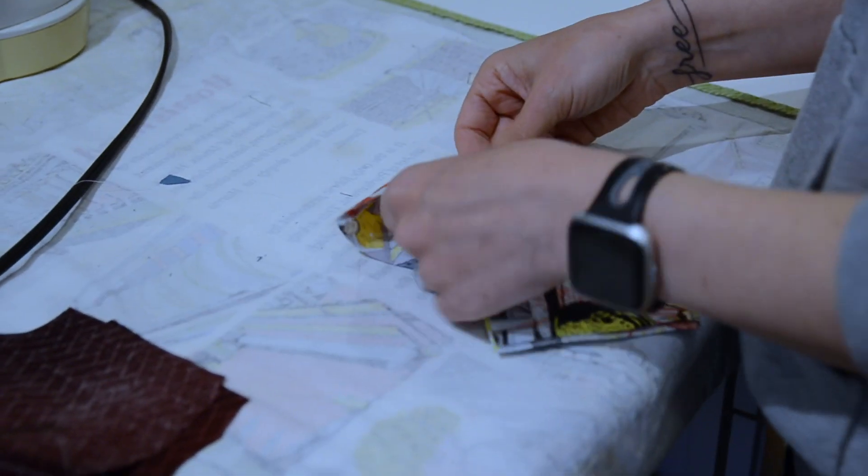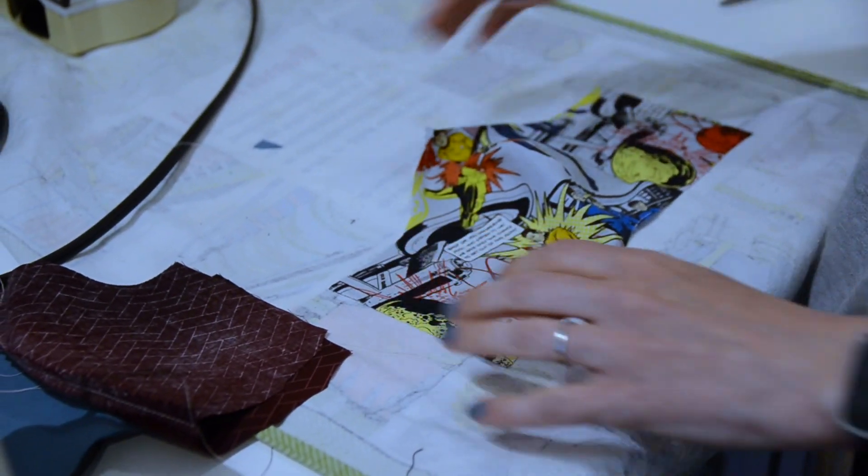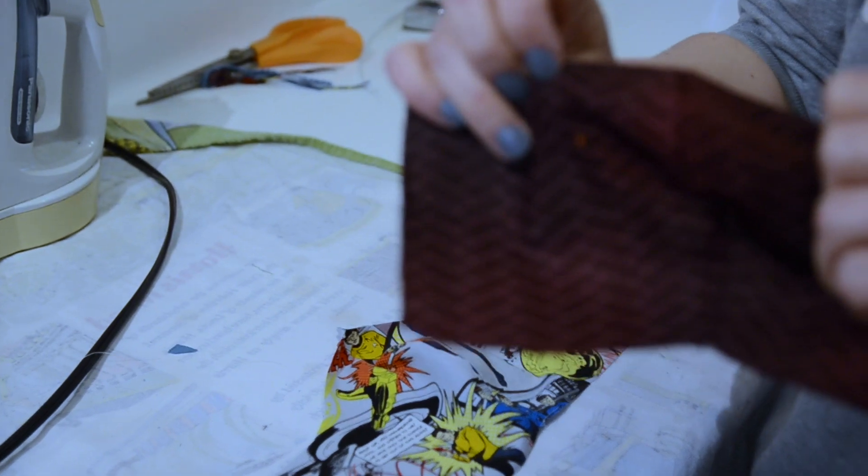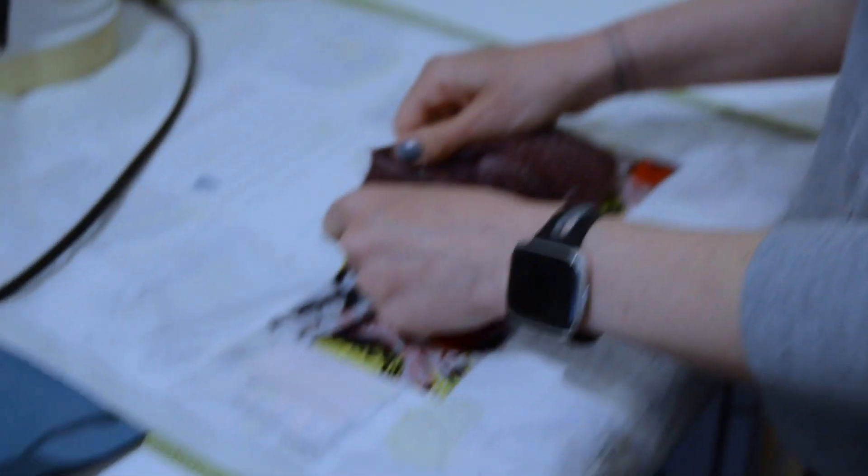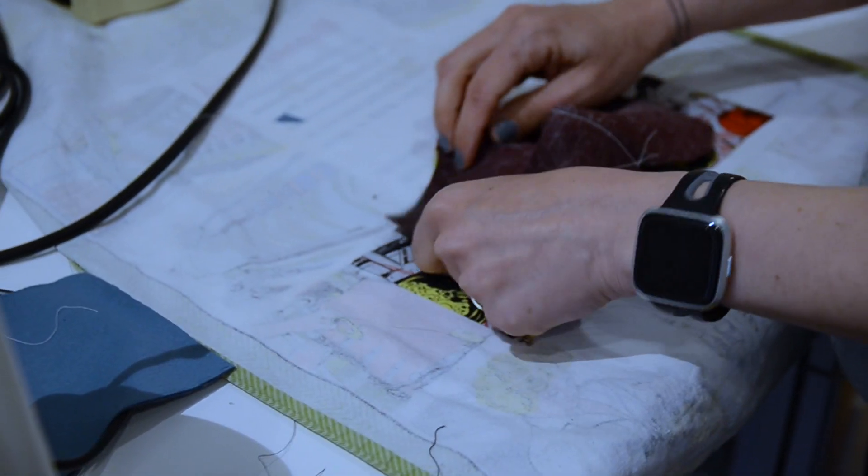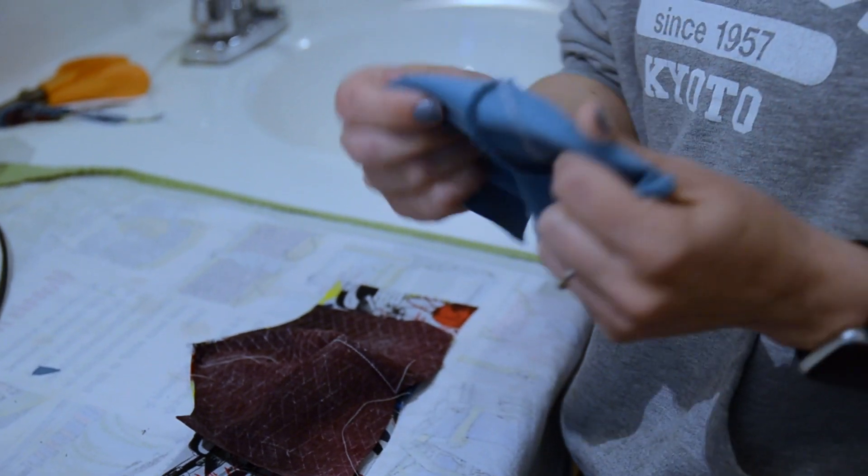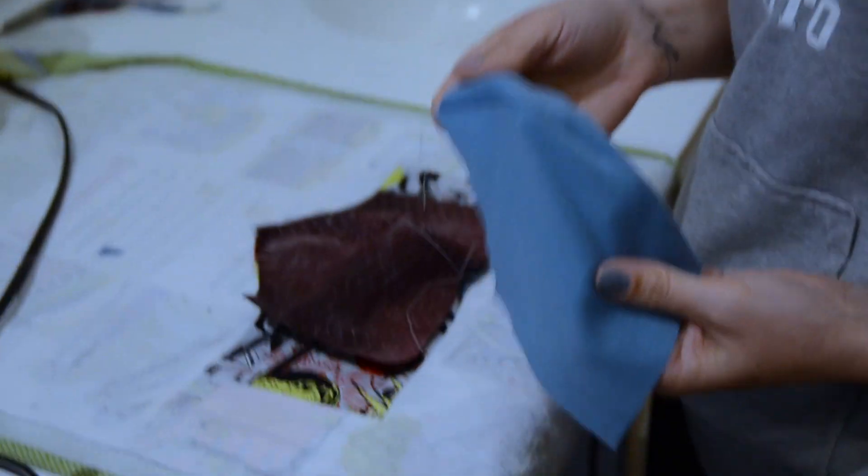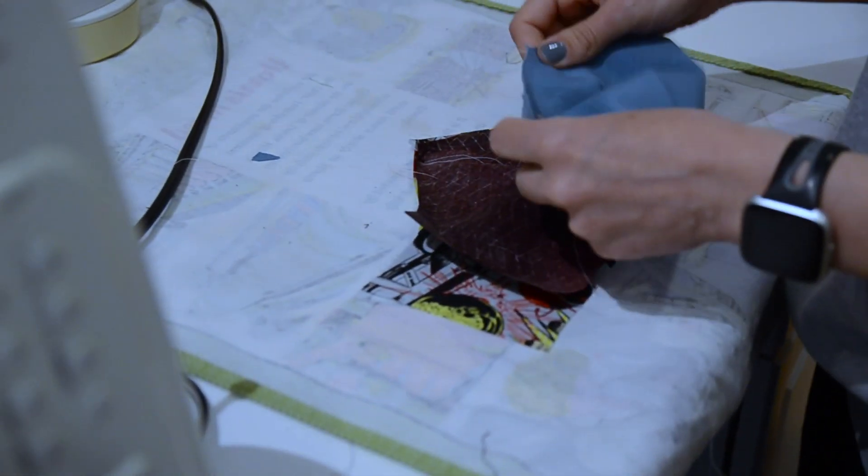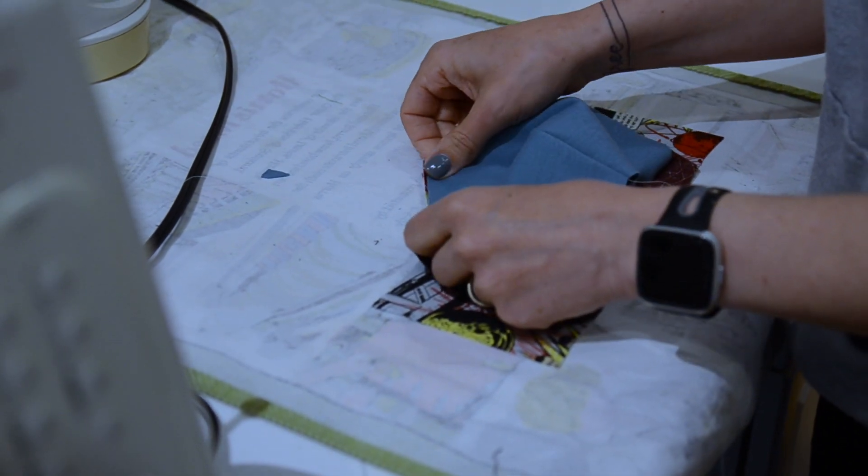Once you've ironed your seams, open it up so the right side is facing up. Take your lining piece with the right side facing down. You're going to start to make a sandwich with your pieces. Now you're going to take your lining piece, and it doesn't matter which way you put this. I like to keep the seams down so it's neater. And line this up as well.